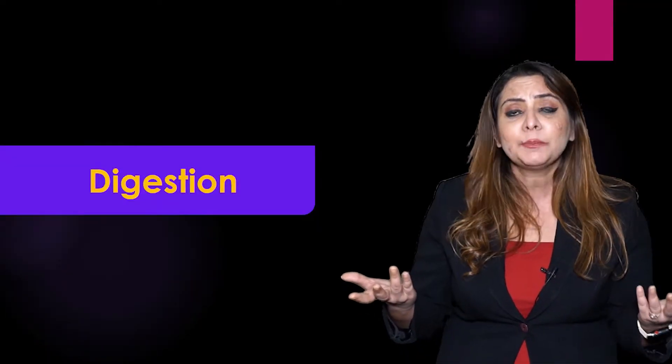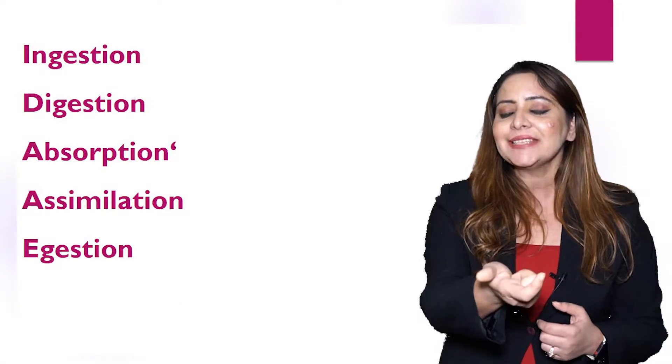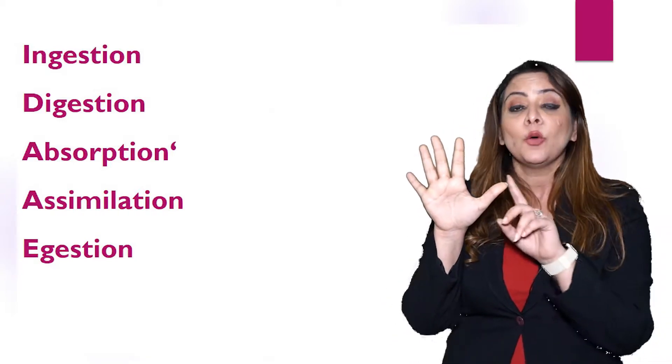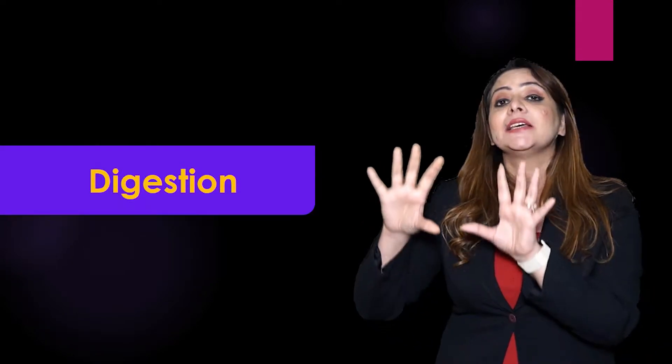Let's start about nutrition in human beings - how you and I obtain food. We are heterotrophs, meaning we cannot make our own food because we don't have photosynthetic pigments to trap solar energy and convert it into chemical energy. We show a holozoic mode of nutrition, following five steps in sequence: ingestion, digestion, absorption, assimilation, and egestion.